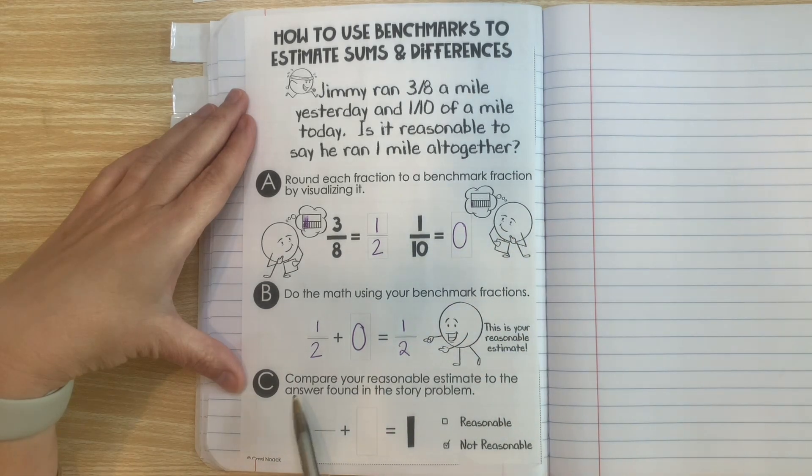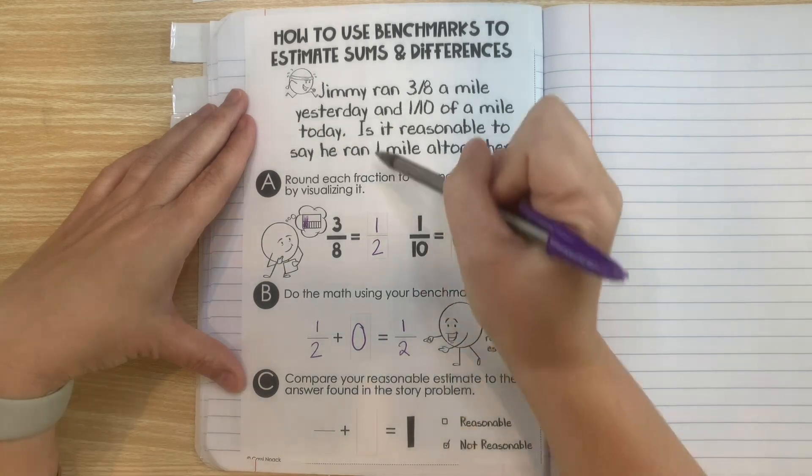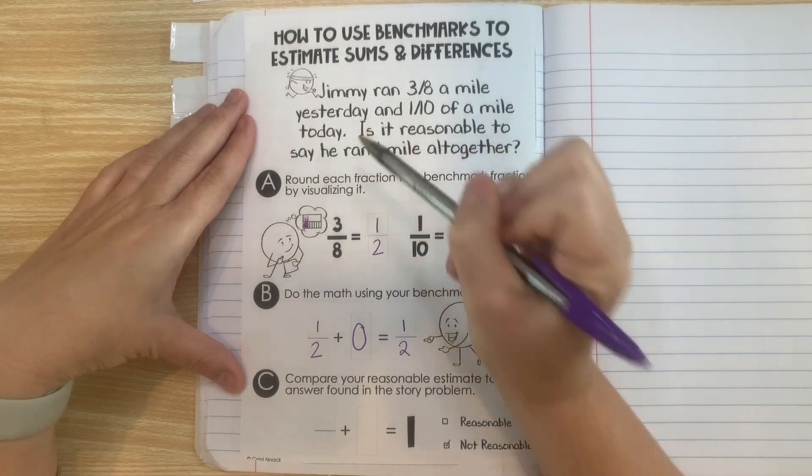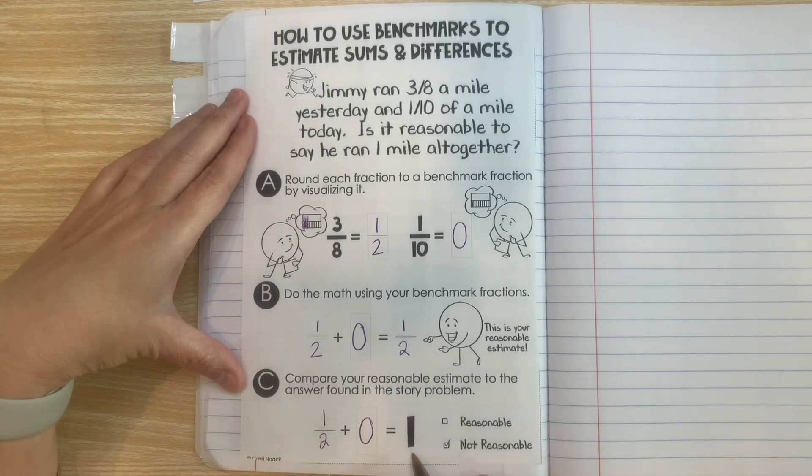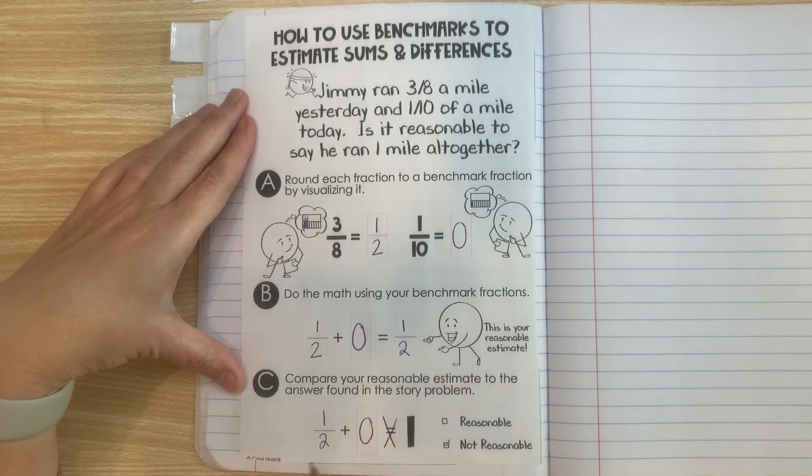Now let's look at C. It says compare your reasonable estimate to the answer found in the story problem. Well, the story problem said one. Is a half plus zero one? No way. It's not. A half plus zero is a half. So this is not a reasonable estimate.